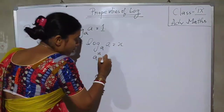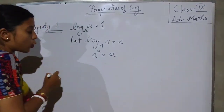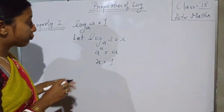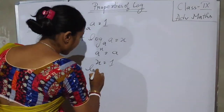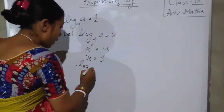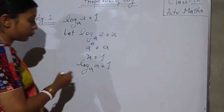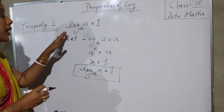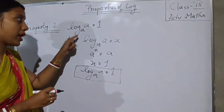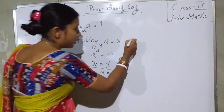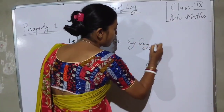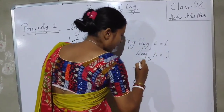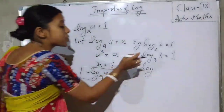This one we can write as A to the power x equal to A. So, what will be your x value? X will be 1. So, we get log A base A equal to 1. We are getting property 1. You have understood that log of any number at the same base will be equal to 1. For example, log 2 base 2 equal to 1, log 3 base 3 equal to 1.